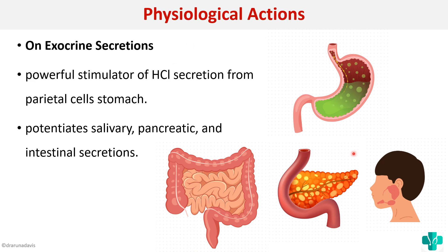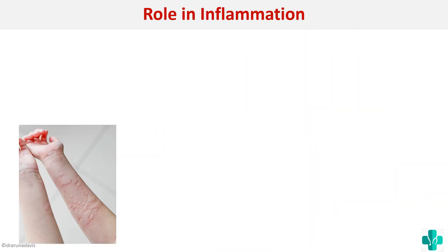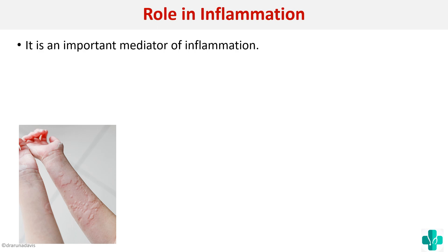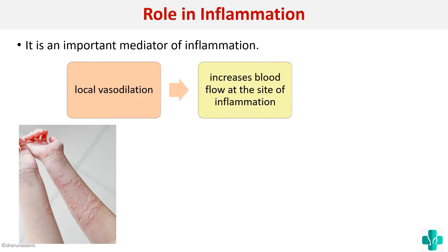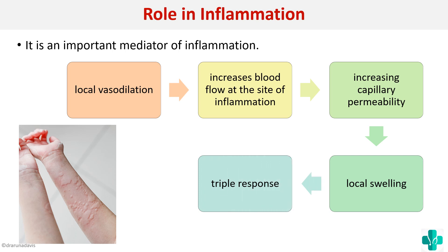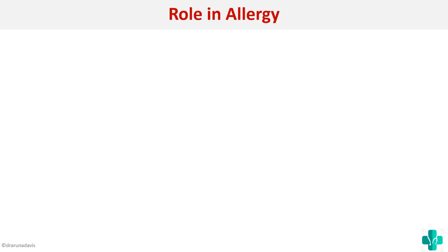Next, the role of histamine in inflammation: histamine causes local vasodilation, which increases blood flow at the site of inflammation, and increases capillary permeability, leading to local swelling. This produces the triple response — Rubor, Calor, and Dolor (redness, heat, and pain) — along with edema at the inflammation site.